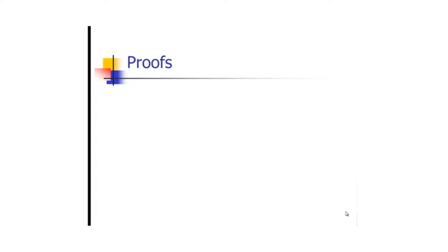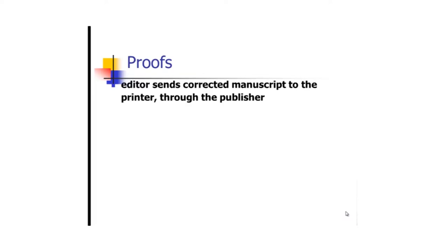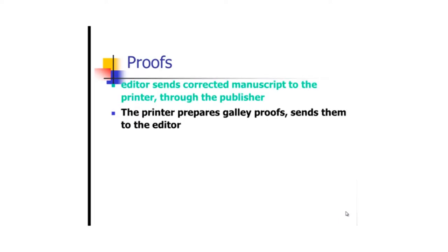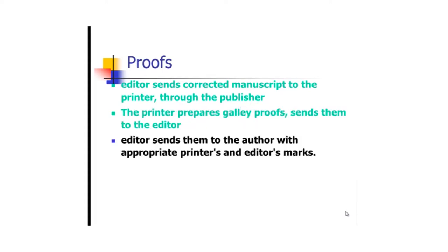Proofs — sometimes also called galley proofs — are the exact layout of how your paper will look like when it is published. They will send you the proofs and you have to read them carefully to see whether they have put everything right, whether they skipped anything or hid anything. That is the purpose of proofs: this is the way your article is supposed to appear in the final version of the issue of that journal.